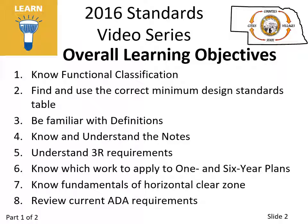Other videos in this series cover the learning objectives shown on this slide. Some of the other videos should be viewed and understood before watching this video on bridges and structures. The assumption is that you are already familiar with, or at least know where to find information on, Functional Classification Systems, Title 428, Nebraska Administrative Code, Chapter 1; how to use the tables on pages 55 through 86 of the minimum design standards; and terminology definitions on pages 37 through 46. Understanding 3R requirements is a point of emphasis because 3R standards were added in 2016. Learning objectives 6, 7, and 8 will not be covered directly in the Bridges and Structures videos.